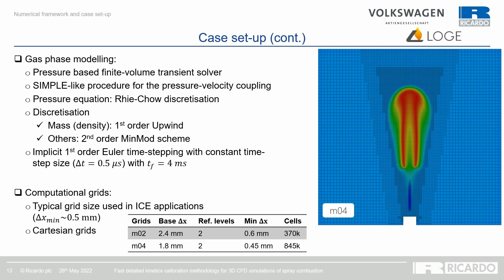The Eulerian phase is modeled using V-SOLVE, a pressure-based finite-volume transient solver employing a SIMPLE-like procedure for pressure-velocity coupling. The equations are discretized using a second-order central-difference scheme, except for density which uses a first-order upwind. Time is advanced using a first-order Euler time-stepping with a constant time-step size of 0.5 microseconds, for a total simulation time of 4 milliseconds — the time at which the jet starts to impinge on the opposite wall.